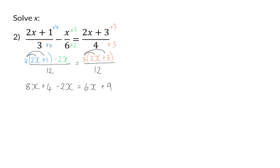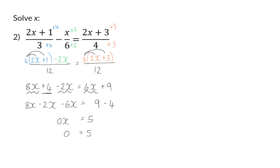In the next step, I'm going to get all the variables on the same side, so I will have 8x minus the 2x, and then I will subtract the 6x on the left. On the right, I'm going to keep the 9 there, and the plus 4 will be subtracted on the right. This means that we are left with 0x is equal to 5. 0 times anything is still 0, so we have 0 equals 5. This is simply impossible, so in this case there's no solution for x. It is impossible for the left-hand side to ever be equal to the right-hand side.